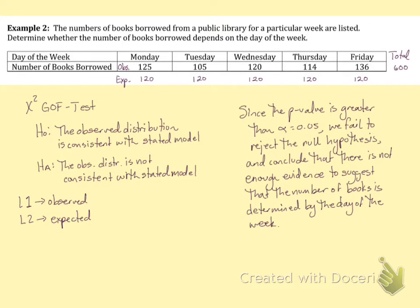And then we need an L3. Put the cursor at the very top where it says L3 and type equals. Your formula is: parentheses L1 minus L2, squared — hit the squared button on your calculator — divided by L2. Then hit enter and it'll populate your entire L3 list.